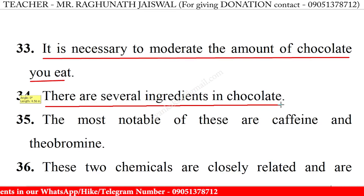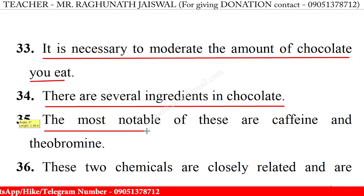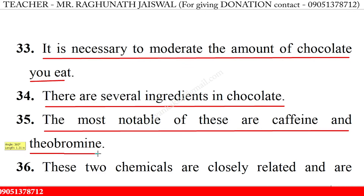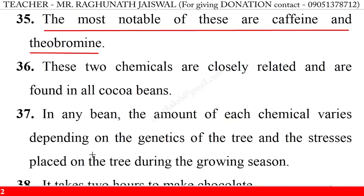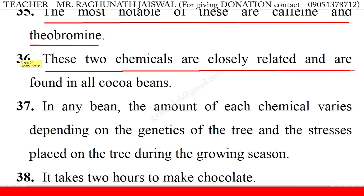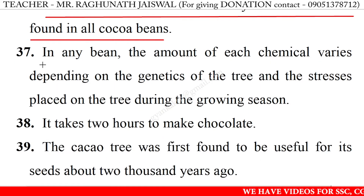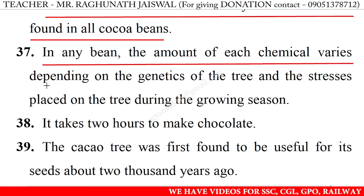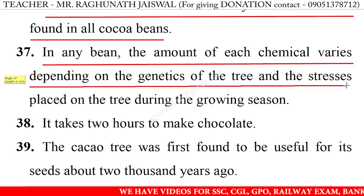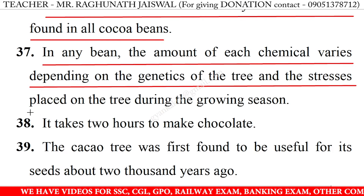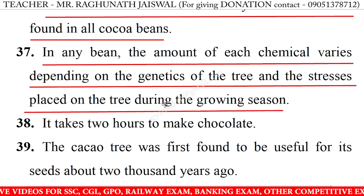It is necessary to moderate the amount of chocolate you eat. There are several ingredients in chocolate. The most notable of these are caffeine and theobromine. These two chemicals are closely related and are found in all cocoa beans. In any bean, the amount of each chemical varies depending on the genetics of the trees and the stresses placed on the tree during the growing season.